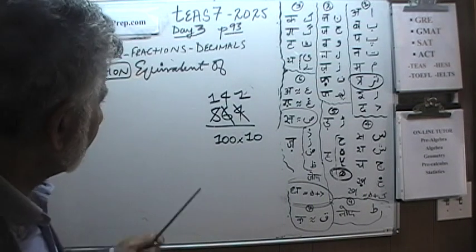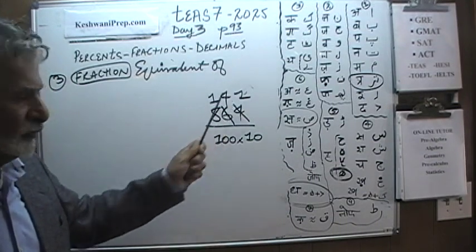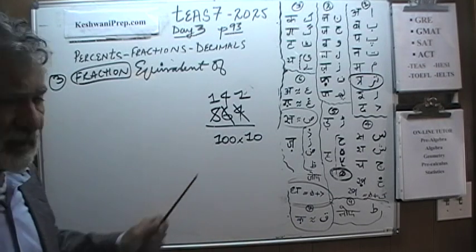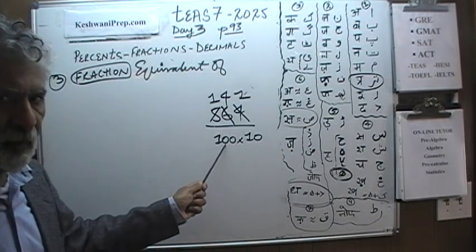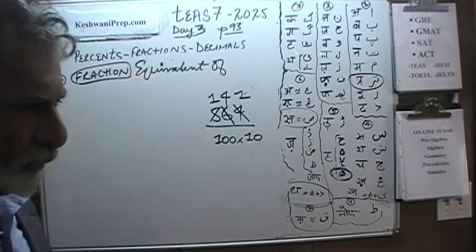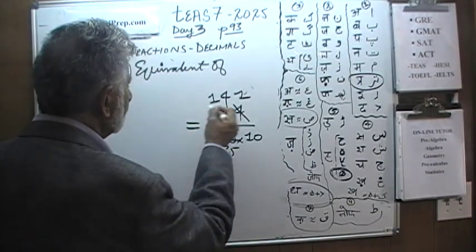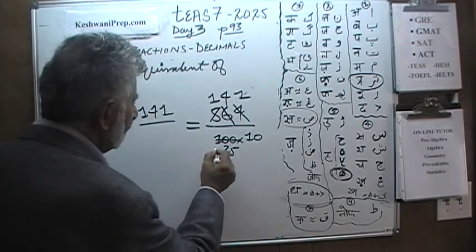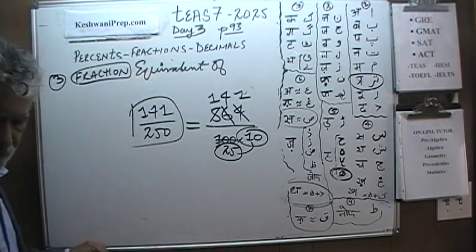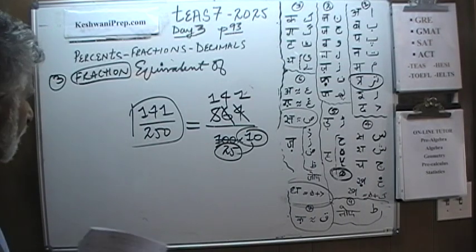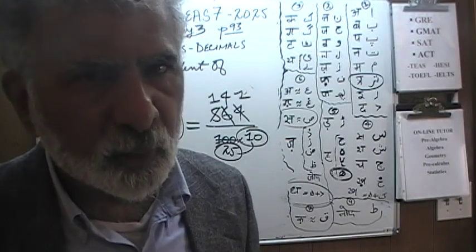5 has one 4, and after we take away 4 from 5 we have a remainder of 1. That 1 goes and joins the 6 to become 16. 16 has four 4s. And 4 has one 4. So dividing 564 by 4 gives us 141. Since we divided the top by 4, we must divide the bottom by 4 as well. And that's why I wrote 1000 as 100 times 10 — it's much easier to divide 100 by 4. Leave the 10 alone. 100 divided by 4 is 25. So we have 141 on top and 25 times 10 on the bottom, which is 250. Therefore 56.4% expressed as a fraction is 141 over 250.